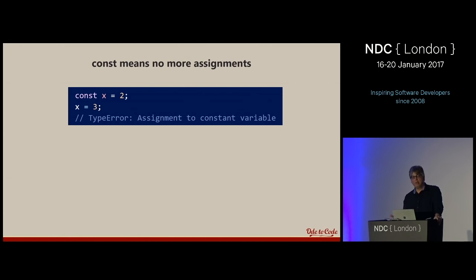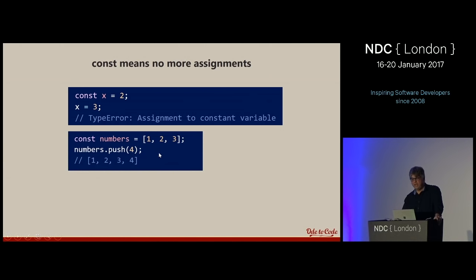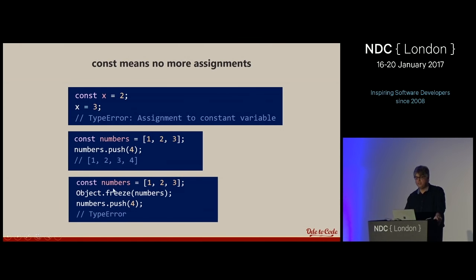There are new keywords to declare variables in ECMAScript 2015. A pattern I like is using the 'const' keyword instead of 'let' wherever you can. Const means no one can reassign that variable — trying to do so is a runtime type error. That doesn't prevent you from mutating the object it points to, like pushing values into a const array. If you want true immutability, there's Object.freeze or libraries like immutable.js.